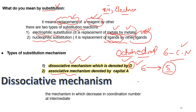The other is the associative mechanism, in which we go from a lower coordination number to a higher coordination number. For example, in the starting complex we have a six coordination number, and we go to a seven coordination number in the intermediate state.